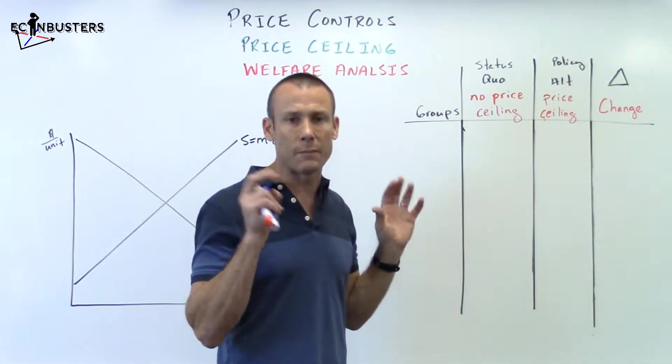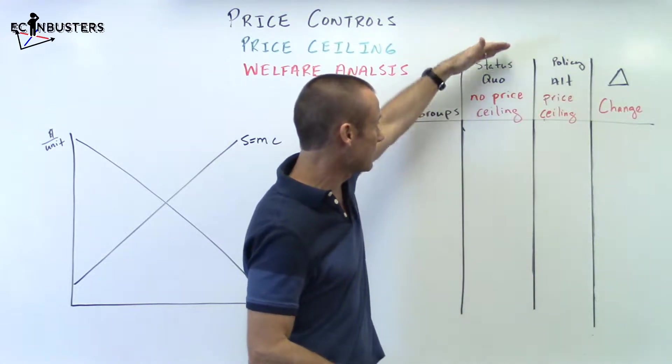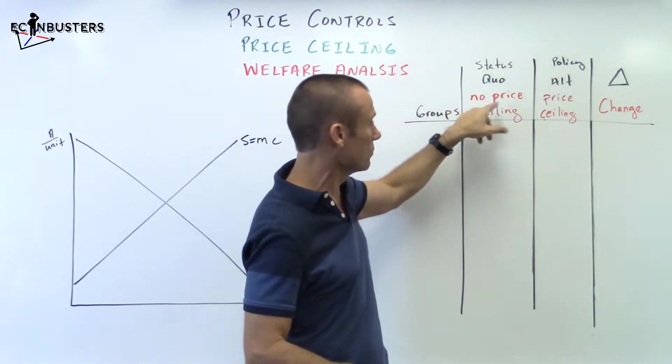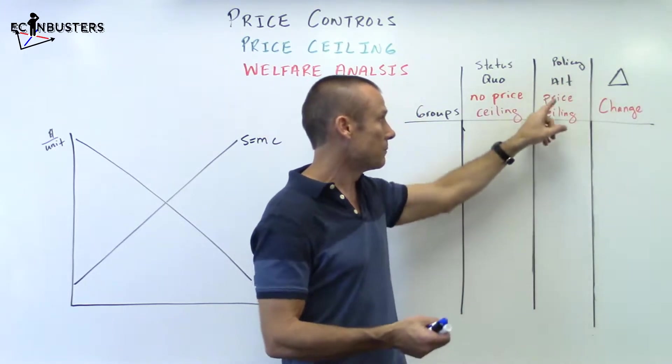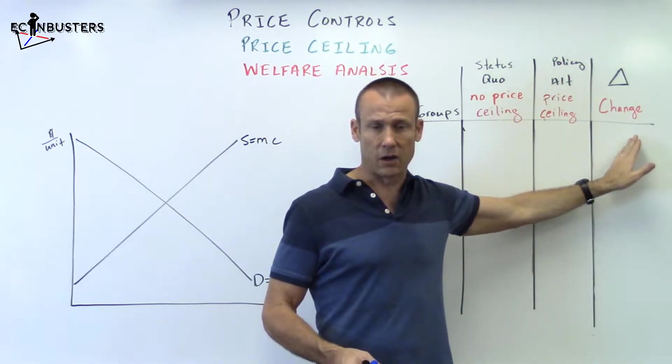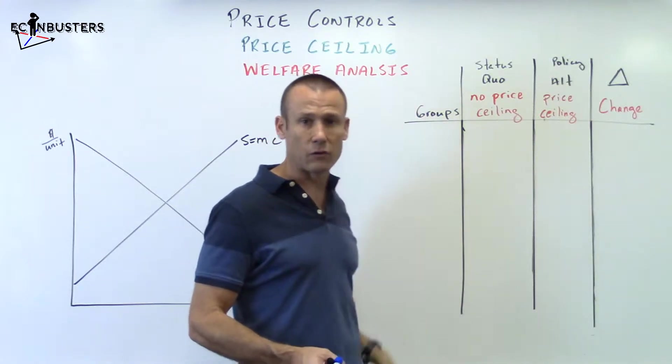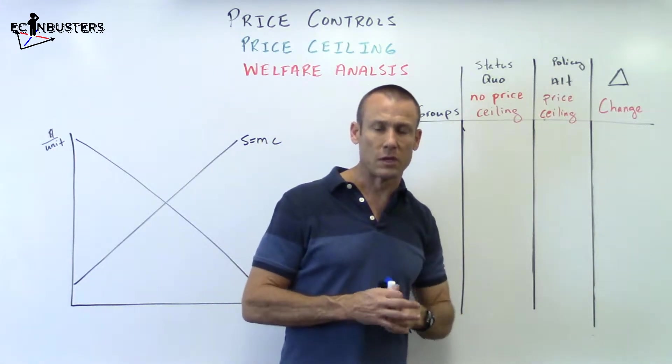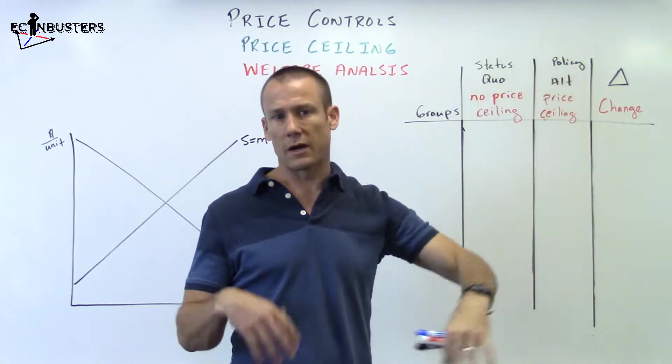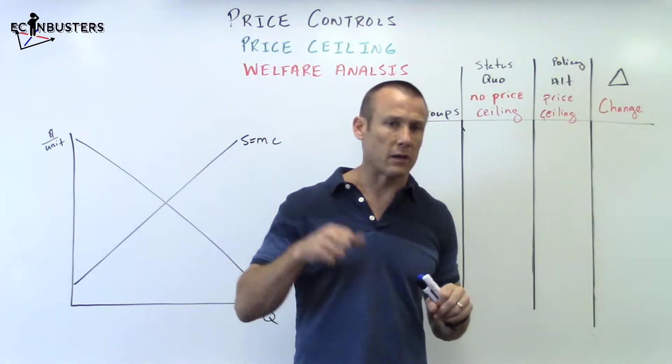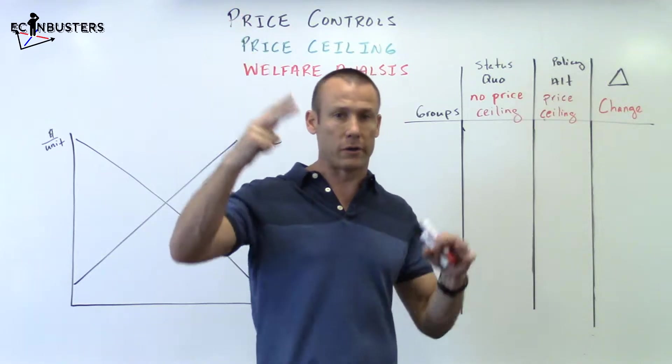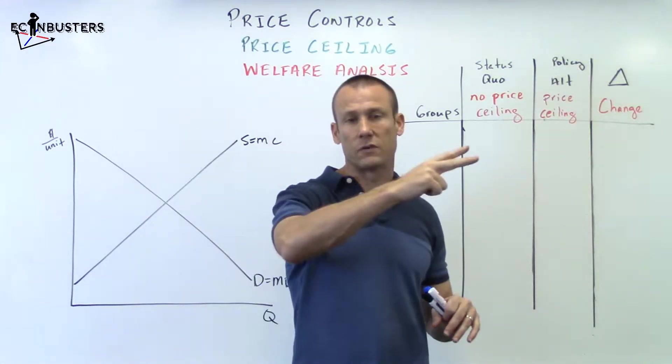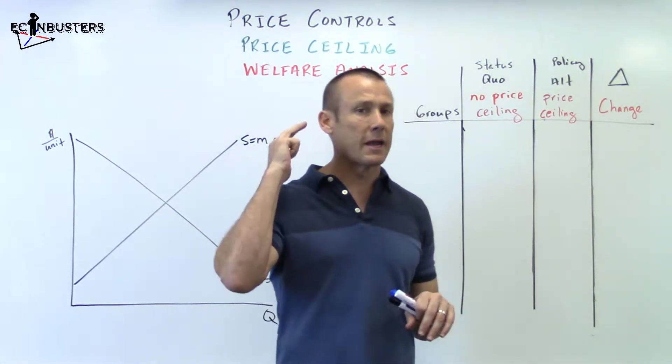So just take a look one more time at the table we've got set up. You've got some policy, we call it the status quo, no price ceiling. And then you've got some policy alternative that you're analyzing, price ceiling. And then you've got a delta column. Over here on the far left, we've got groups. We're going to be looking at different groups.